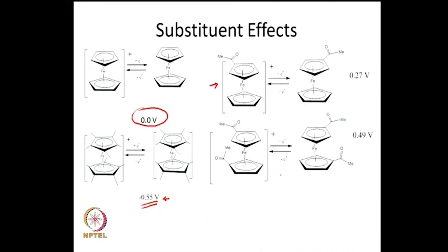If you make it the diacetyl group, it becomes even easier to pump in an electron, and it gets reduced at 0.49 volts with respect to the ferrocene/ferricinium couple. So there are substituent effects, but they are all still reversible electron transfers. One can depend on these electrochemical potentials changing in a systematic fashion.